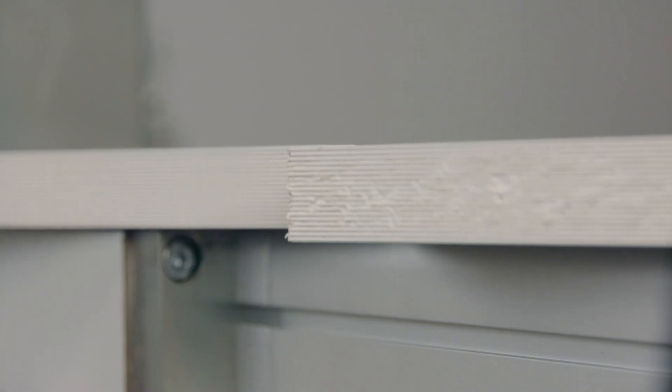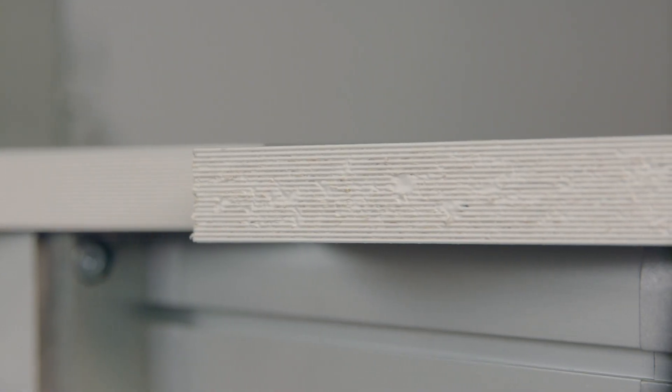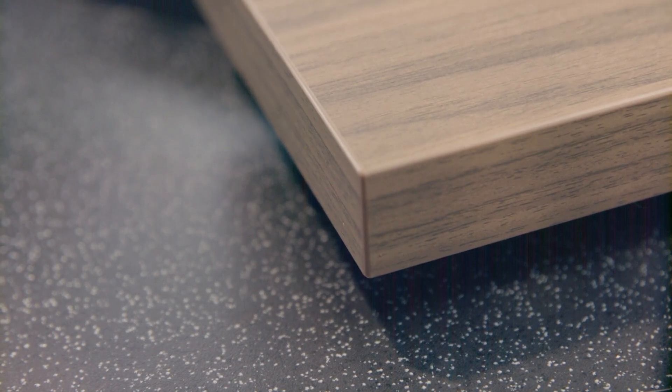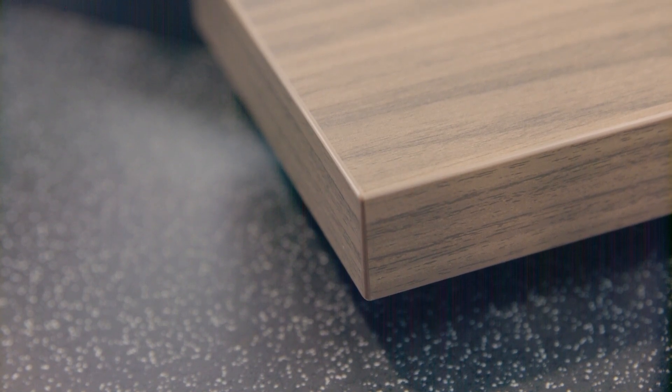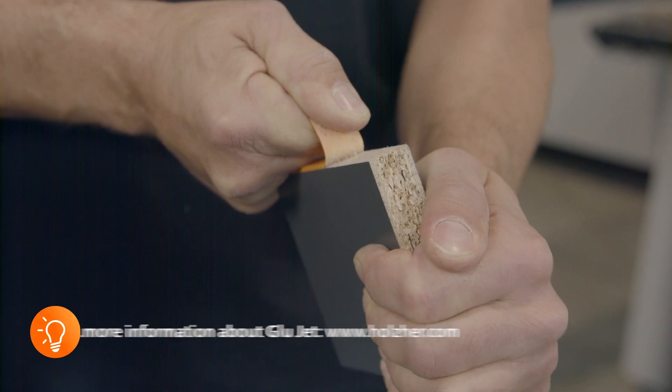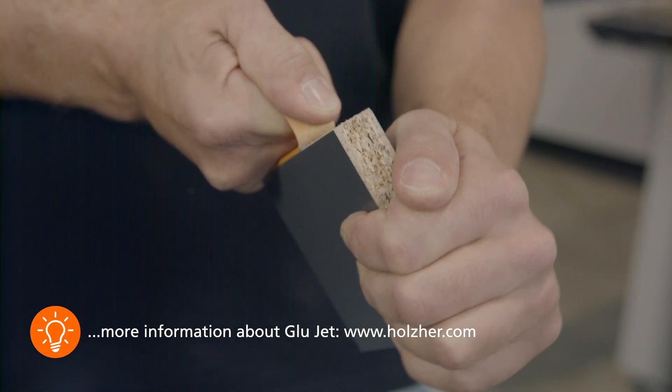During subsequent pressing at the printing unit, the adhesive can now spread from the mountain to the valley within the narrow surface without swelling at the top and bottom, thus creating a clean optical zero joint. At the same time, this patented process ensures a high-strength joint.